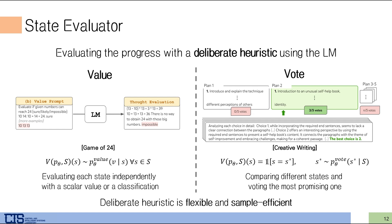The classification gives information on whether to keep these thoughts or not. Voting selects the most promising thought across several states. For creative writing, they vote for one of the thoughts and select the most promising one.